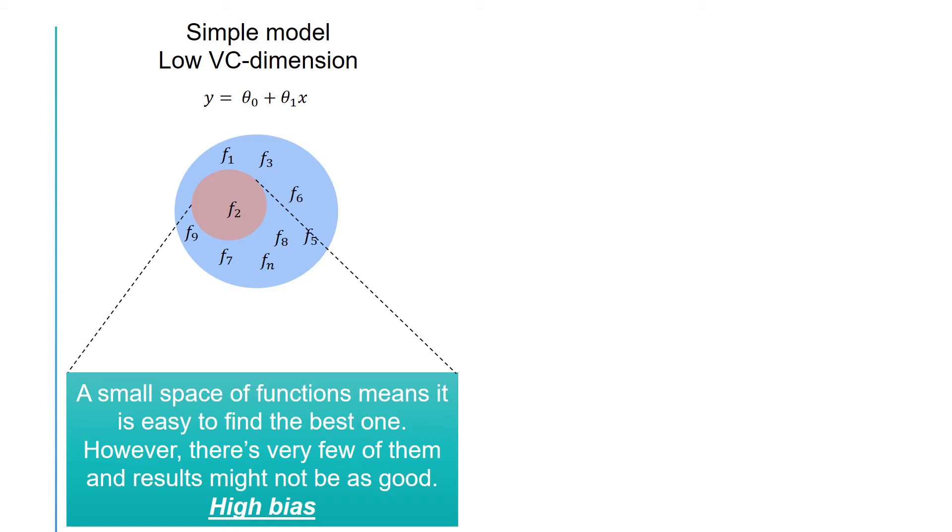So there is not much variability or variance in the resulting function. This means that if you are given a different sample for your training data, you will end up with more or less the same function. However, since there are only a limited number of functions in your space to choose from, the performance might not be good enough. In this case, we could have high bias but low variance.